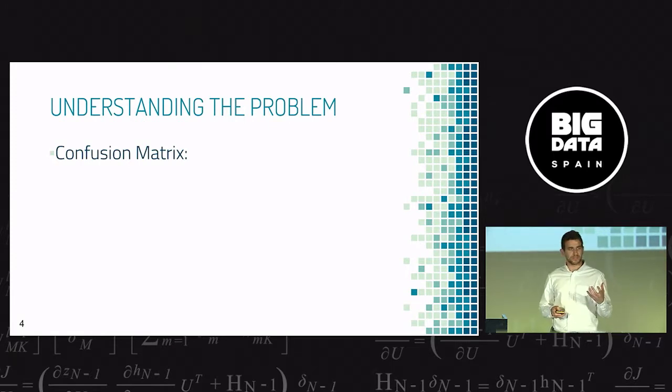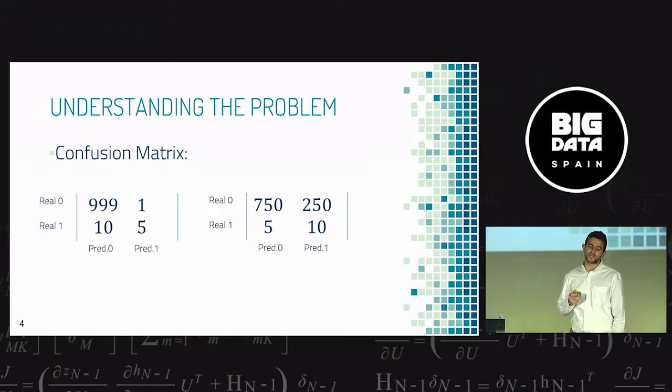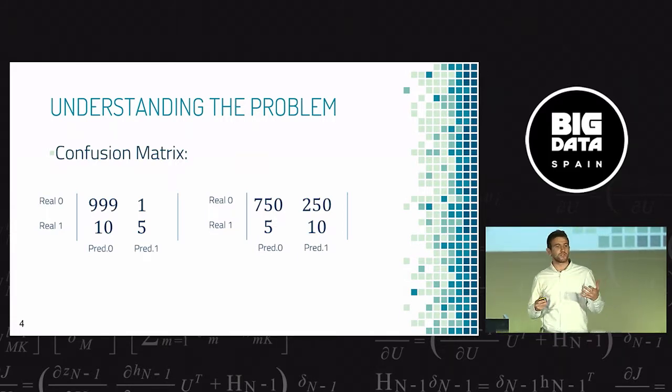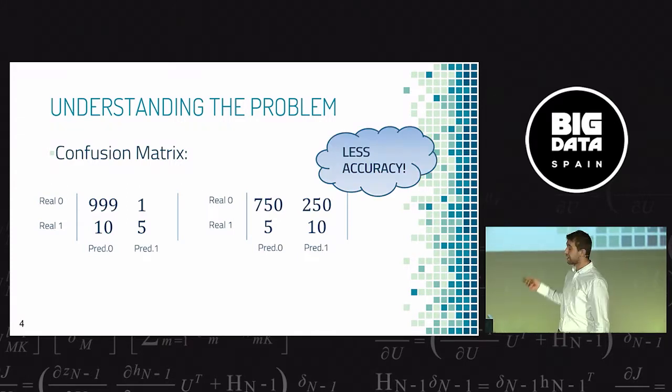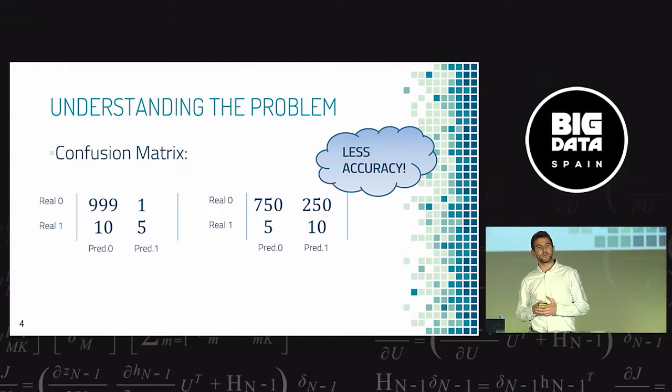I think it's easier to understand attending these two confusion matrices. Both are results of the same problem. Note that we have the same number of ones and zeros in both cases. My question is which one is better? Obviously the right one has less accuracy than the left one, but which one is better? The answer is it depends on the problem.